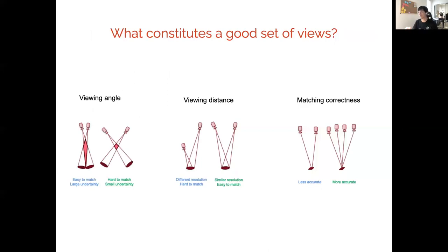We introduce three criteria that constitute a good set of views for reconstruction. The first is viewing angle. If you have cameras close to each other with small viewing angles, it's easy to find feature correspondences such as SIFT or SURF, but you introduce larger uncertainty. While if you have large viewing angles, it's harder to find feature matches, but you introduce smaller uncertainty. So we need a balance here.